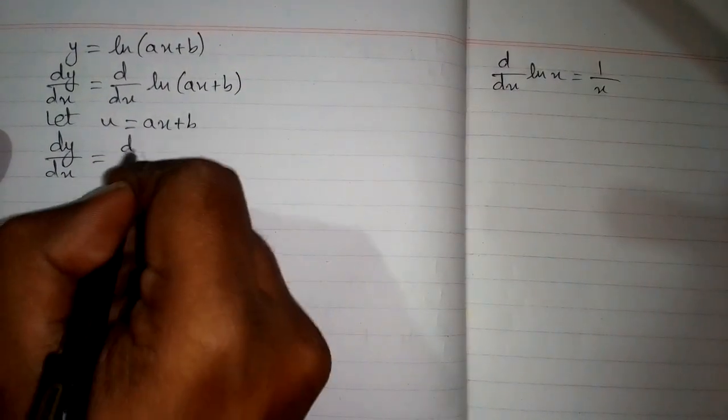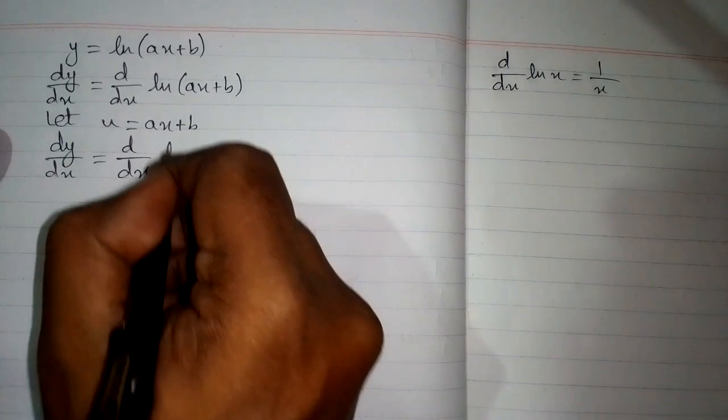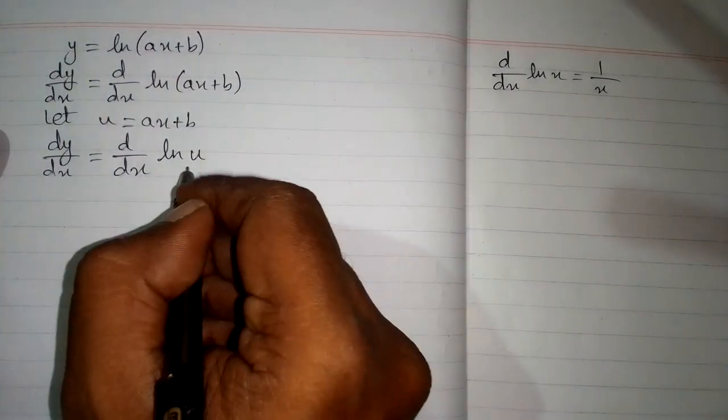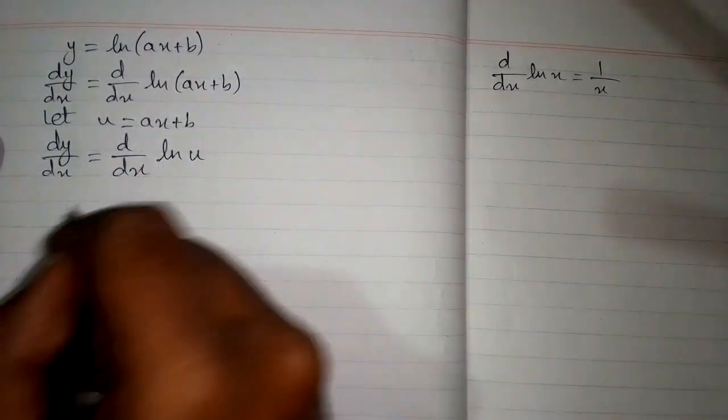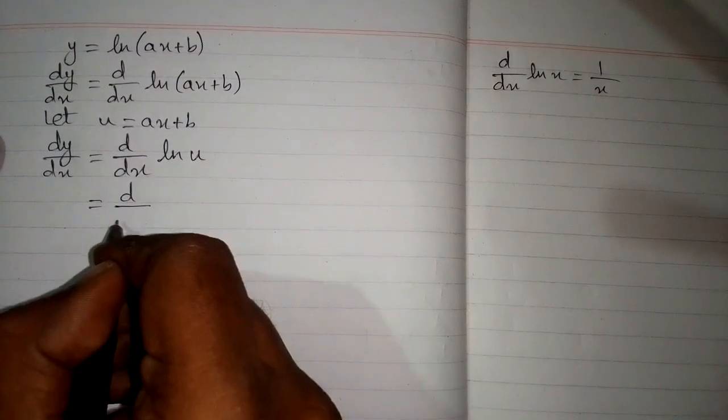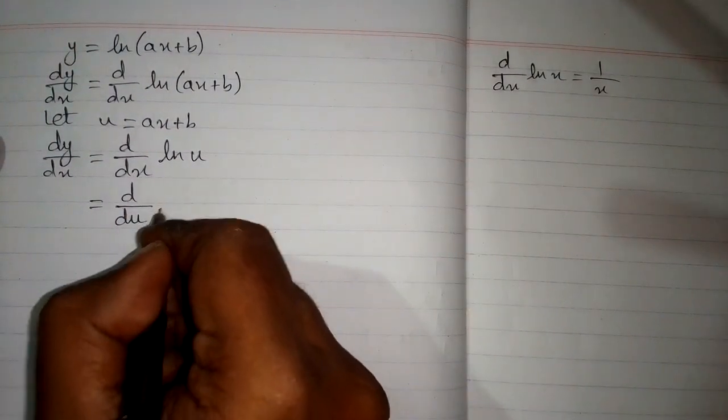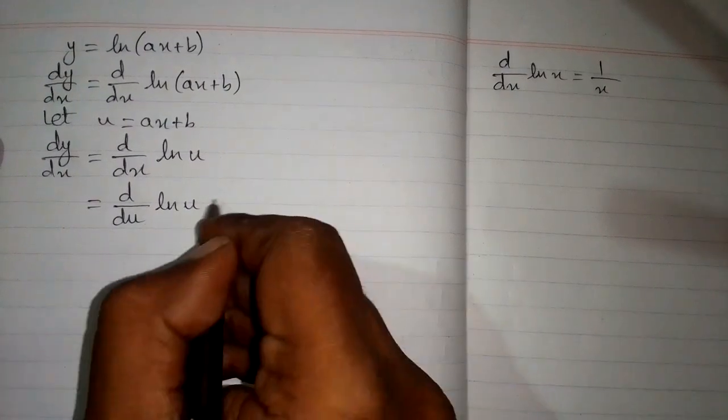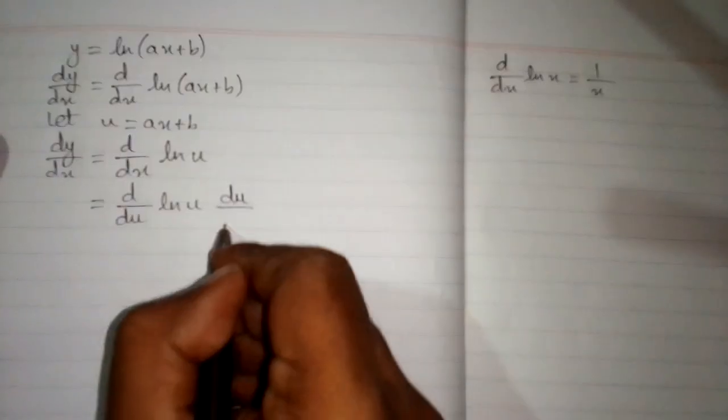So we have dy/dx equals d/dx of ln of u. Again these two variables are not same. And we must have du in place of dx. So we will write du and multiply it by du/dx.